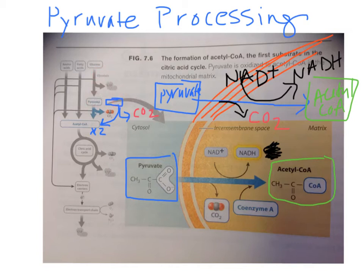Remember, we made two pyruvates. Here's the overview: two pyruvates, here's one, here's the other. They go in across the double membrane into the matrix of the mitochondria.